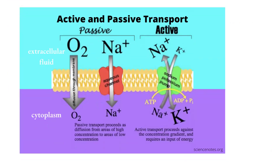Looking at this diagram, it summarizes what passive and active transport are all about. For passive transport, the process proceeds by diffusion from areas of high concentration to areas of low concentration — for example, the transportation of oxygen diffusing through the membrane and transportation of sodium diffusing through the aqueous channel. For active transport, the transportation of sodium and potassium requires energy because it is against the concentration gradient, requiring a sodium-potassium pump to carry out the process.